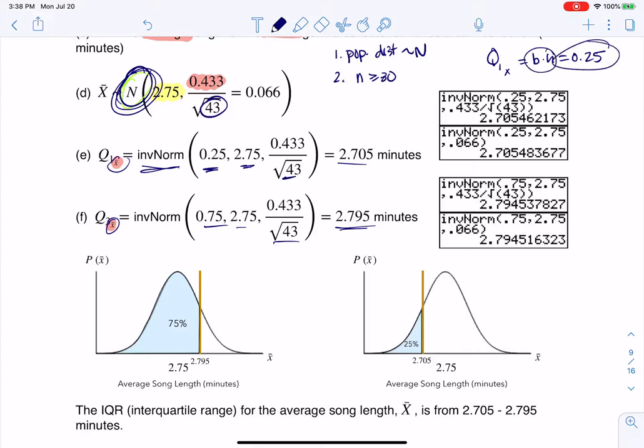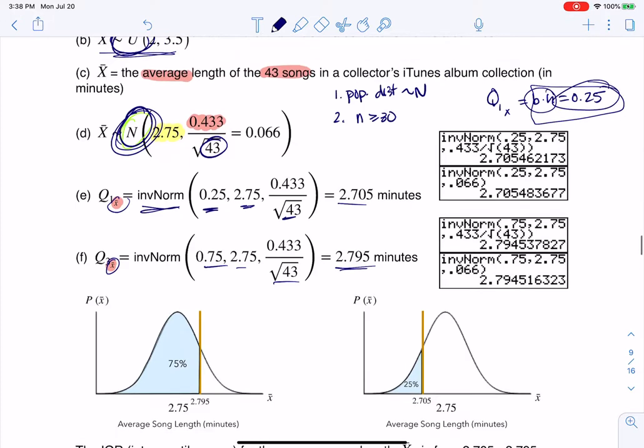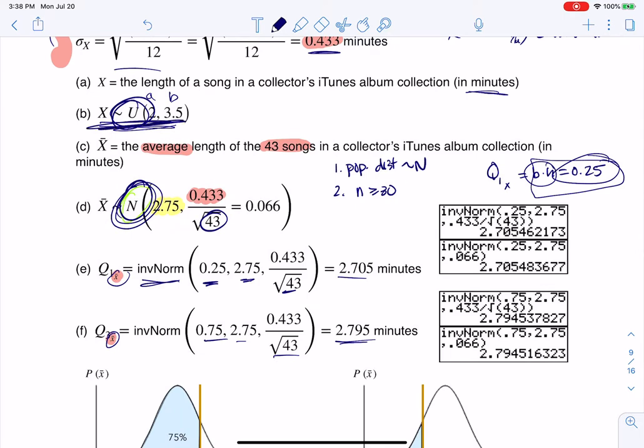and you set it equal to your percentile. And the reason I would do this formula is because the population distribution was uniform, and that's the rules we have in the uniform distribution.